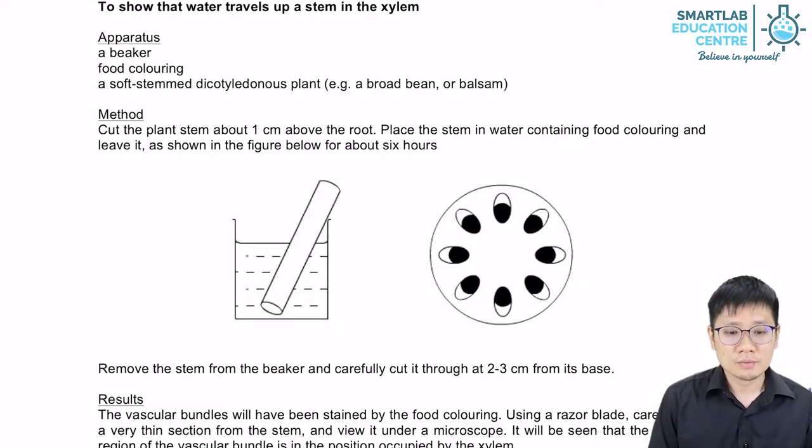Cut a soft-stemmed dicotyledonous plant's stem and place it in a beaker of water that has been colored. We usually use a food coloring or dye to give it color. This is so that we can examine the uptake of water through the xylem.